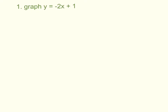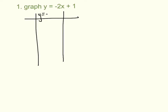Example number one: graph the equation y equals negative 2x plus 1. We're going to make a t-table. In the middle, I'm going to leave room for work. As eighth graders, you should be able to do this completely in your head, but on this assignment I want you to show this middle step. In the future, you can skip the center work area. X is what you plug in, y is what comes out. Pick any three values — I'm going to pick 0, 1, and 2.